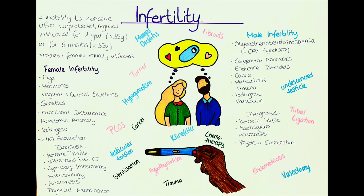Infections can also lead to infertility, especially the STI chlamydia, or the non-STI infection with mumps, which often leads to mumps orchitis. Endocrine disorders such as hypogonadism can also lead to infertility. Other causes include Klinefelter syndrome — a genetic disorder where men have an extra X chromosome, so the karyotype 47,XXY. Cancers or the medications used to treat them can cause infertility as well, including testicular cancer, cytostatics, chemotherapeutics, and radiation.